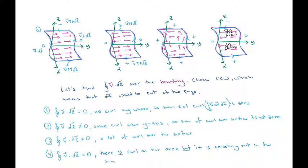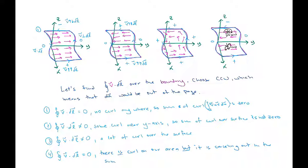Even if I don't care about the curl at an individual point, but I'm trying to calculate the sum of the curl over a surface, this shows I can still use the values of the boundary and get the right answer. Even if there is some curl in my surface, if those two curls cancel out, I'm still going to find along the boundary that the line integral gives me zero.